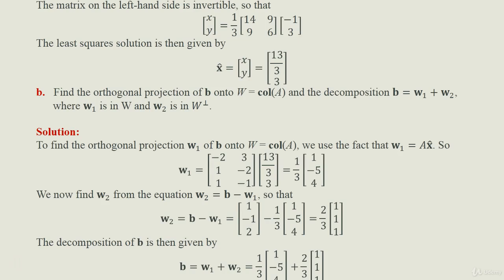The least square solution is then x̂ = [x; y] = [13/3; 3]. For the second part, we find the orthogonal projection of b onto W (the column space of A) and the decomposition b = w1 + w2, where w1 is in W and w2 is in W⊥. We use the fact that w1 = A x̂, so w1 = A times x̂ = (1/3) times [1; −5; 4].